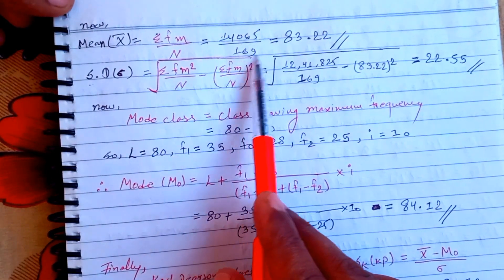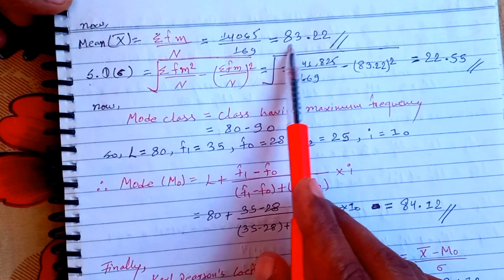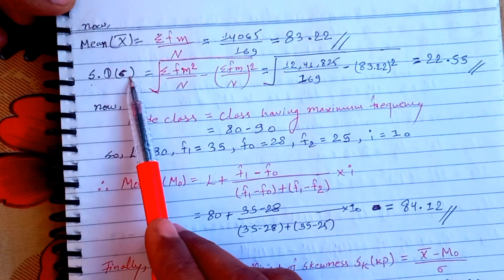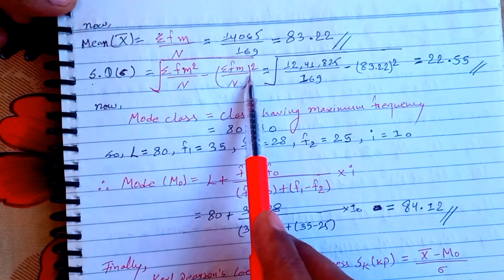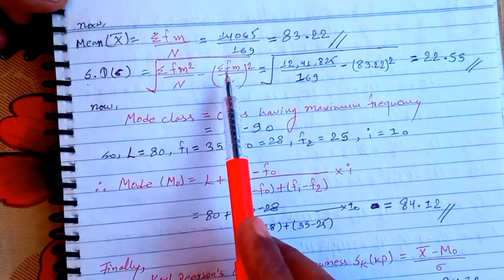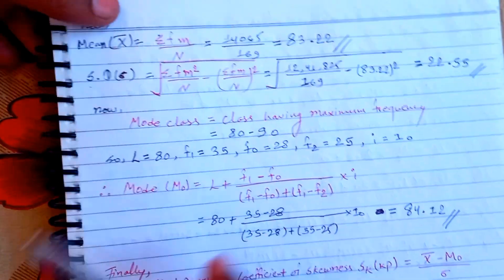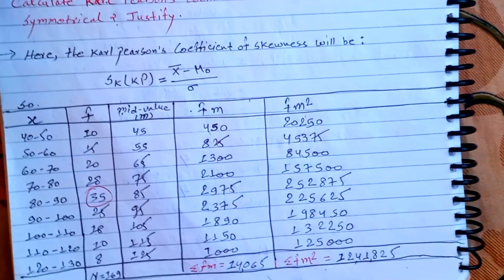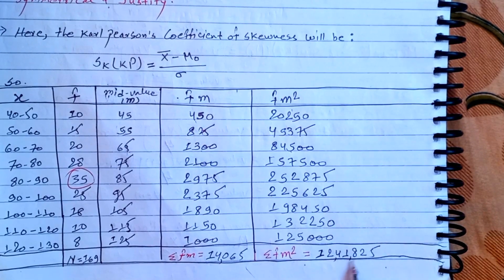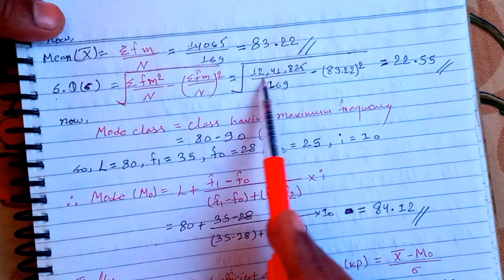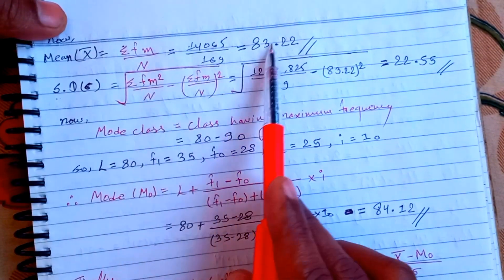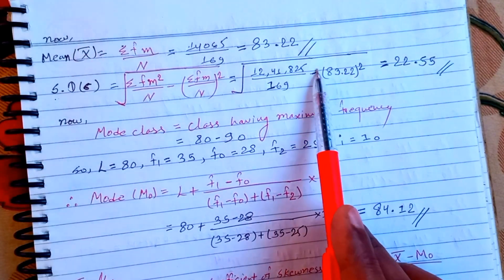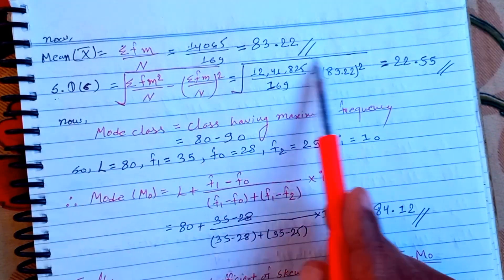The result is 14,065 divided by 169, which gives a mean of 83.228. For the standard deviation, the formula is: root of (sigma f×m² divided by n) minus (sigma f×m divided by n)². Using sigma f×m² = 12,610,825 divided by n = 169, minus sigma f×m by n squared.